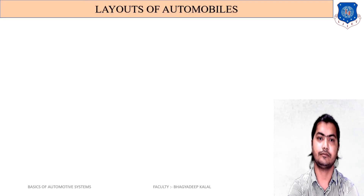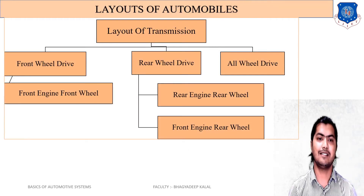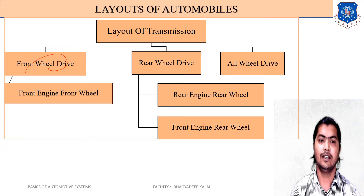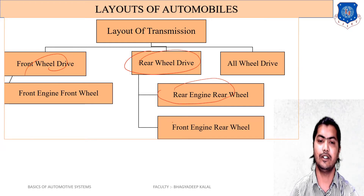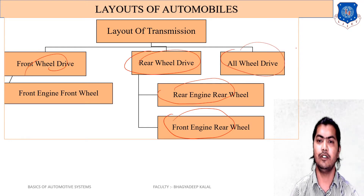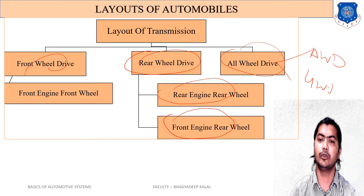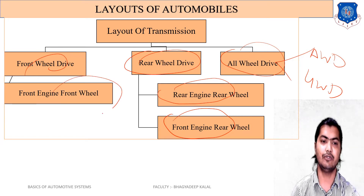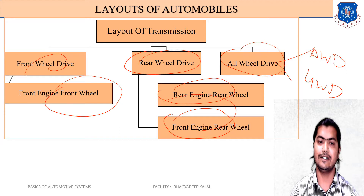The layout of the transmission system includes: front wheel drive — first type is front engine front wheel drive; rear wheel drive — which includes rear engine rear wheel drive and front engine rear wheel drive; and all wheel drive, which has two sub-types: AWD (all wheel drive) and 4WD (four wheel drive). In our syllabus, three types are mainly studied: front engine front wheel drive, front engine rear wheel drive, and all wheel drive.